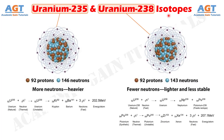Uranium-235 and Uranium-238 are two isotopes of uranium. Both contain the same number of electrons and protons. Both isotopes are naturally available; however, their abundancy has a wide gap. While about 99.28% of the entire Earth's uranium is Uranium-238, only 0.72% is Uranium-235.